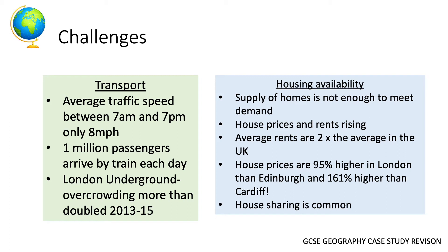The housing shortage has led to house prices and rents rising. Average rents in London are twice the UK average. House prices are 95% higher in London than in Edinburgh and 161% higher than in Cardiff — chosen as the capitals of Scotland and Wales to put into perspective how high London house prices are. This has led to more house sharing, which can itself lead to overcrowding.